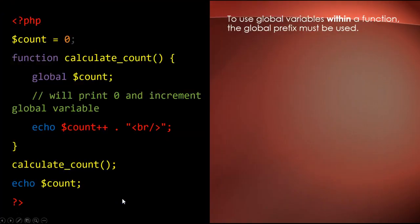If you want to use a global variable within a function, you just use this global prefix. So here the variable is declared, here we use the global prefix, and then it can be called here or here.